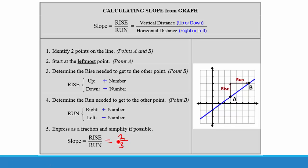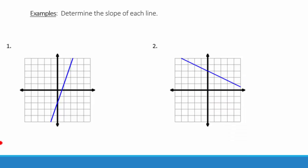We can also check that this line is going uphill from left to right and therefore the slope should be positive. Now determine the slope of each line — not just whether it is positive or negative, but the actual number of the slope.